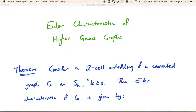In this video, which is going to be our last about Euler characteristic, we're going to talk about Euler characteristic for higher genus graphs — higher genus meaning not planar. We know how to calculate the Euler characteristic of a planar graph, whether it's connected or disconnected.